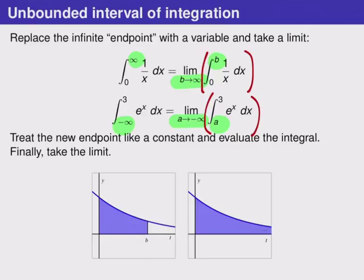So as b goes off to infinity we might get a limit for the area and that's what we call the value of the integral. This is the process that we're highlighting up on the top.